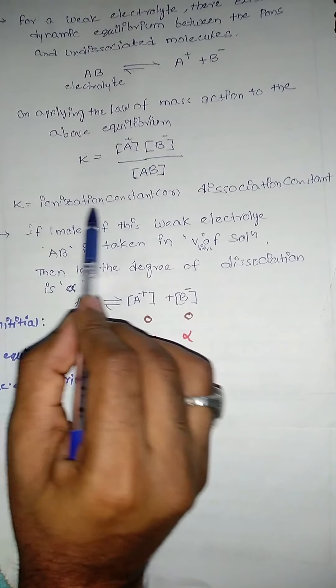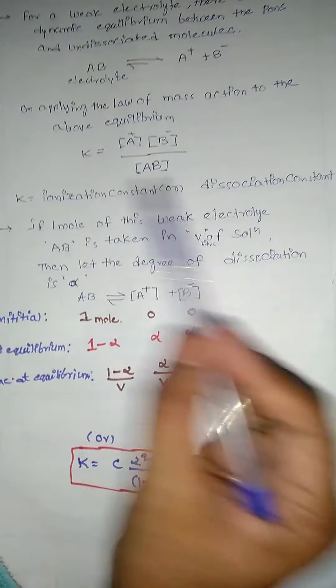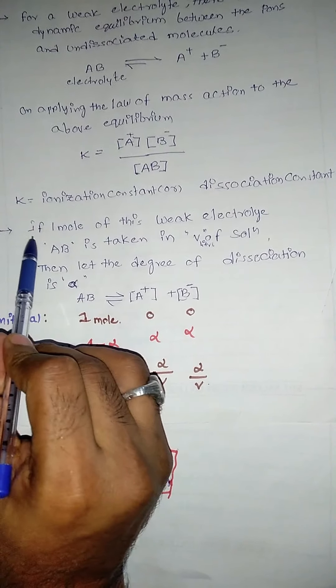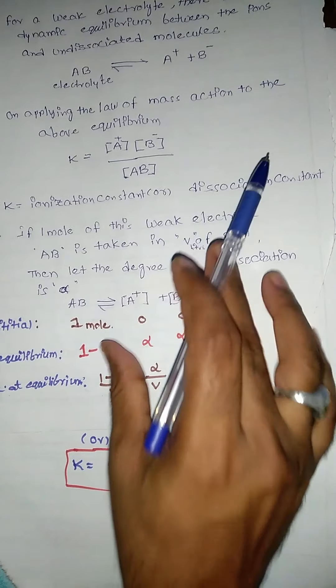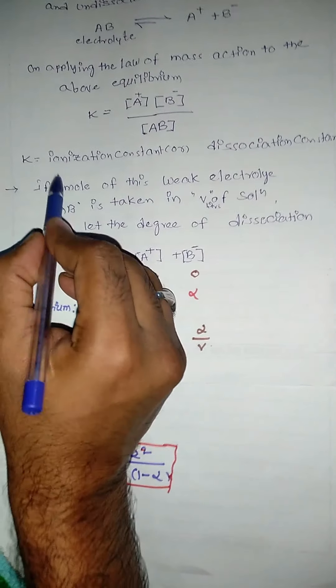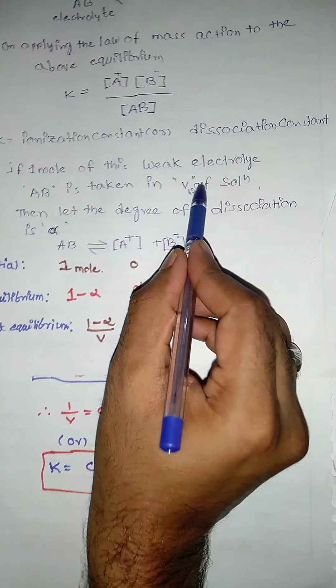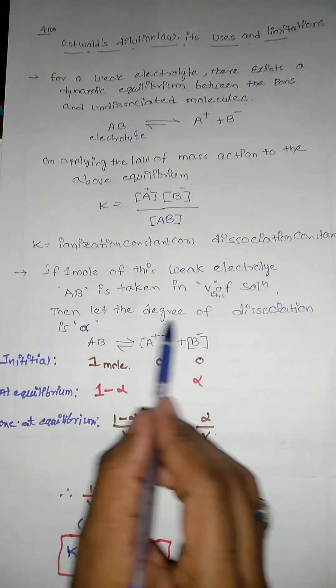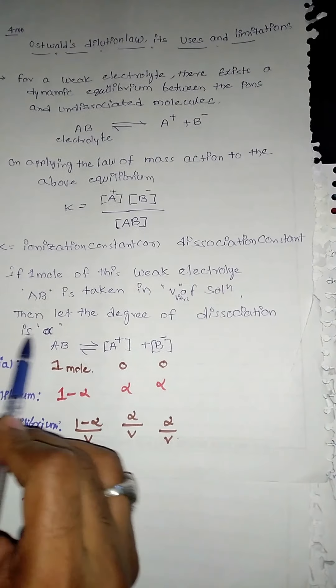Here, K equals the ionization constant or dissociation constant. If 1 mole of this weak electrolyte AB is taken in V liters of solution, then let the degree of dissociation be alpha.